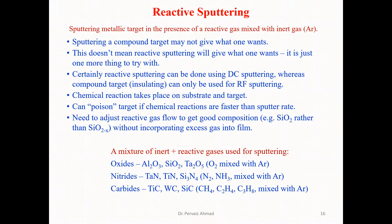For carbides — titanium carbide, tungsten carbide, silicon carbide — the reactive gases used for sputtering along with argon include CH4, C2H4, C3H8, all mixed with argon.